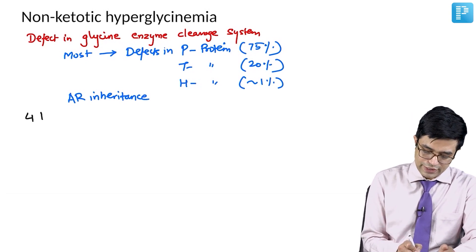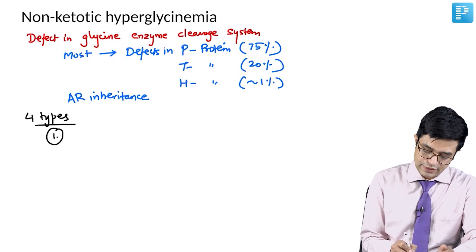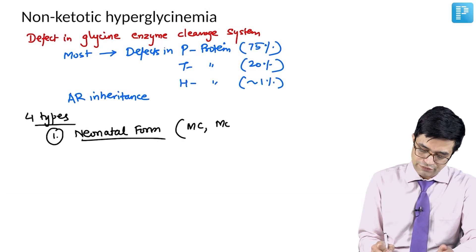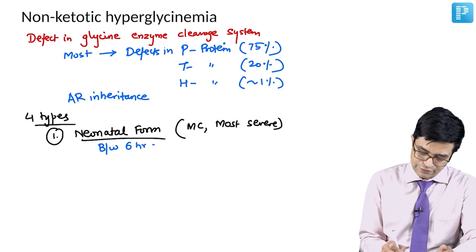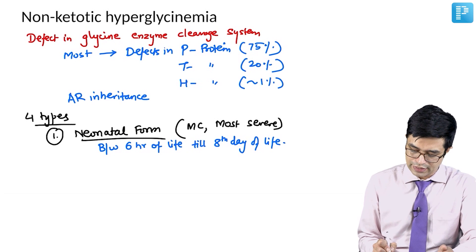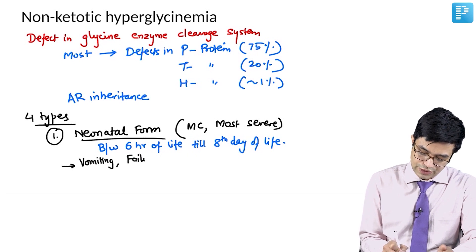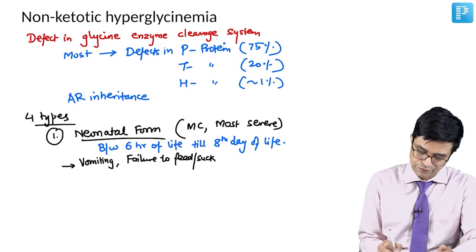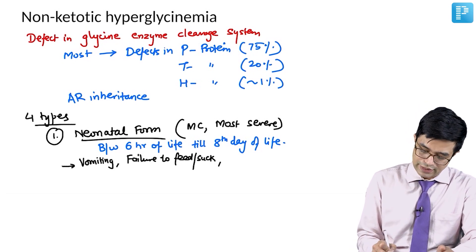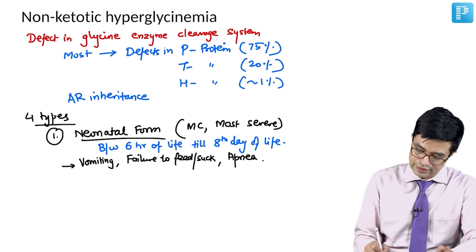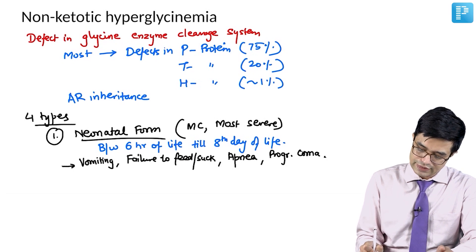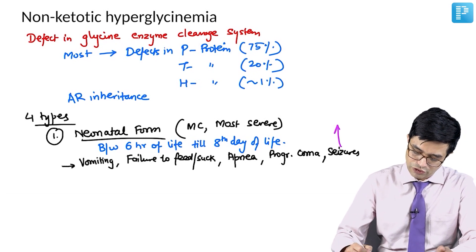Four types of NKH have been described. The first is the neonatal form, considered the most common as well as the most severe form. The time of presentation is anywhere between 6 hours and the 8th day of life. It manifests with onset of vomiting, failure to feed or suck, episodes of apnea, and progressive coma. Seizures have also been reported, typically of the myoclonic variety.